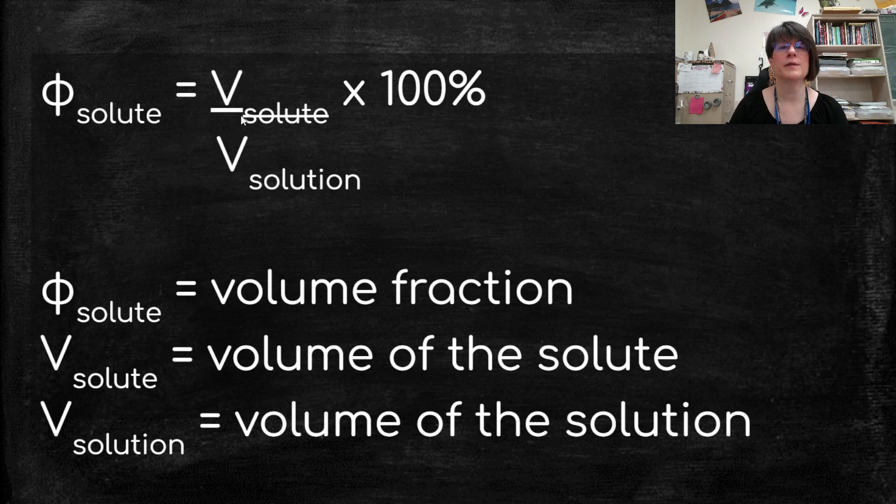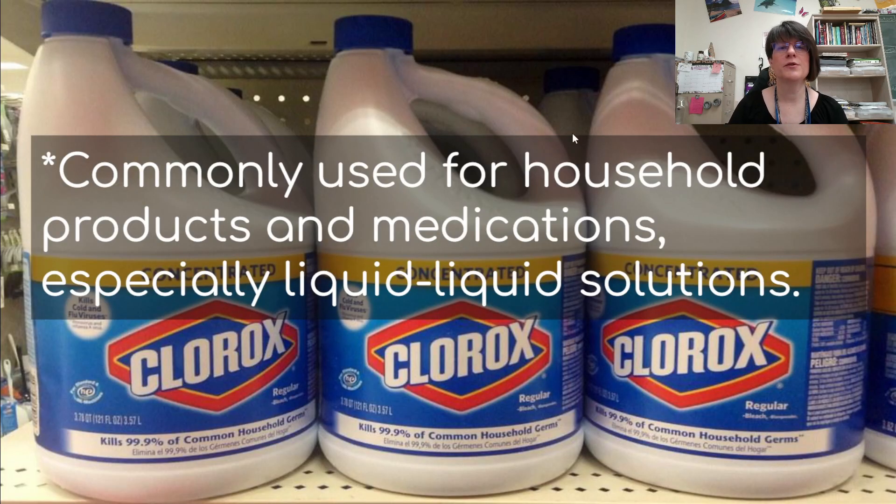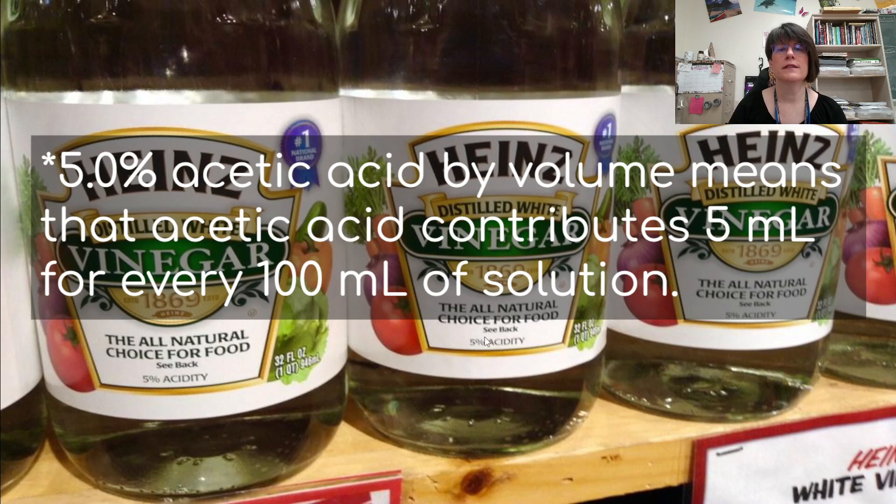Again, limitation of the program, this should be just a division sign. It's not crossing out solute, times 100%. This is commonly used for household products and medications, especially liquid-liquid solutions. And down here, we see 5% acidity. 5.0% acetic acid by volume means that acetic acid contributes 5 milliliters for every 100 milliliters of solution. And we see that right here on this label. So we're not going to do a calculation for this one.